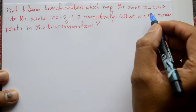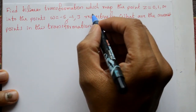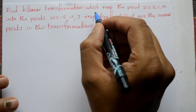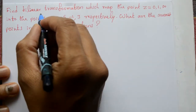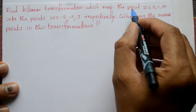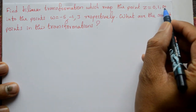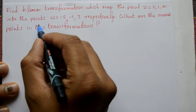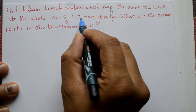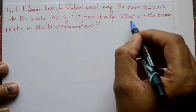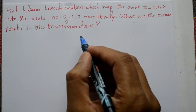Welcome friends. This problem ko solve karenge — a problem on bilinear transformation and conformal transformation. Find the bilinear transformation which maps the points z = 0, 1, infinity into the points ω = -5, -1, 3 respectively. What are the invariant points in this transformation?